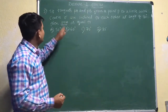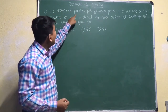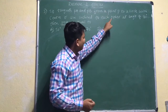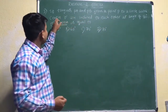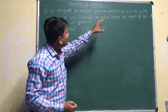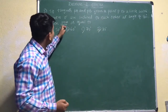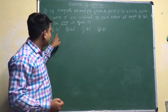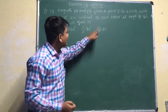In the third question, they have given: if tangents PA and PB from a point P to a circle with center O are inclined to each other at an angle of 80 degrees, then angle POA is equal to — with four options: 50 degrees, 60 degrees, 70 degrees, and 80 degrees.